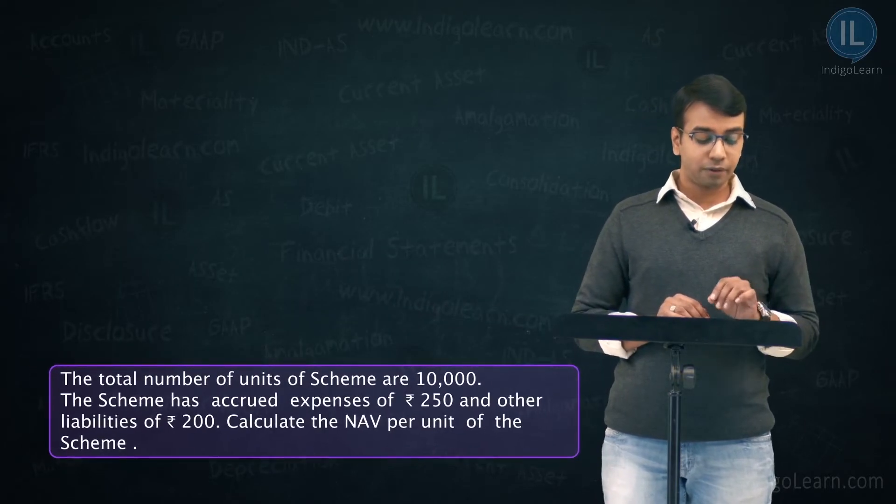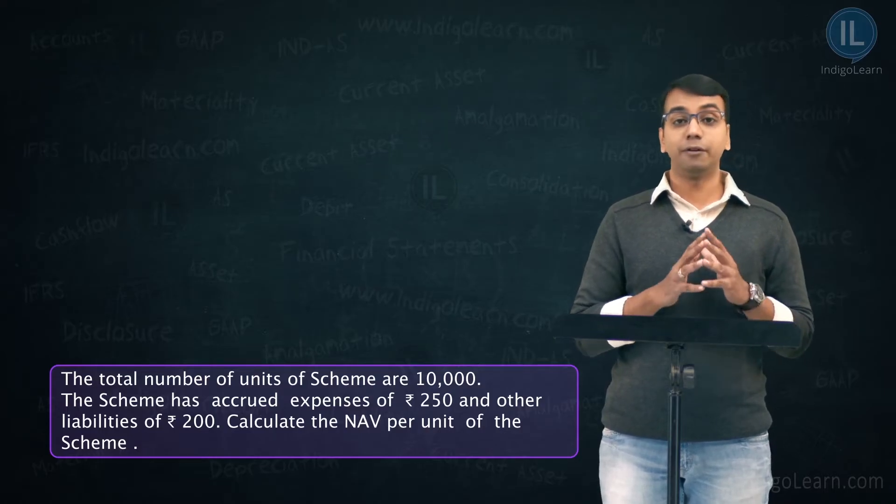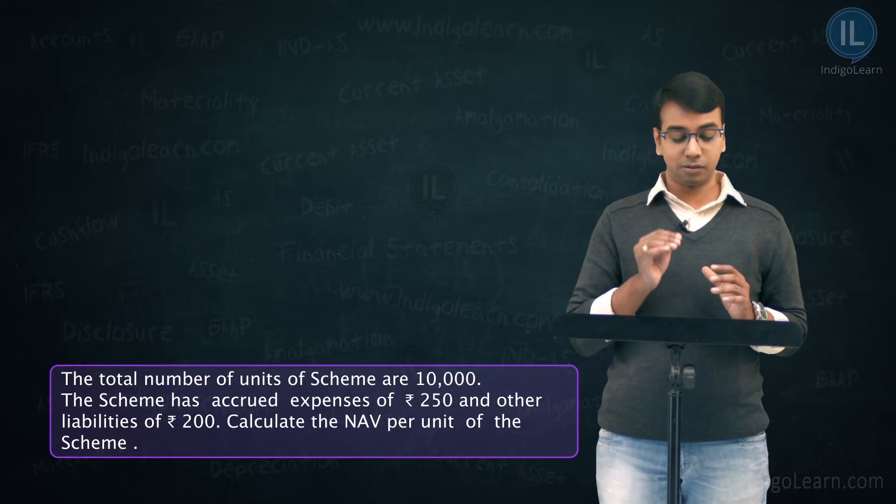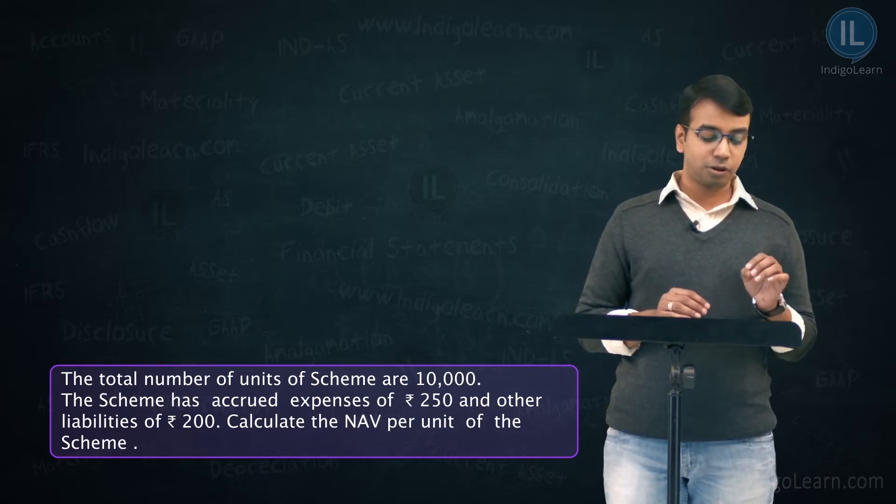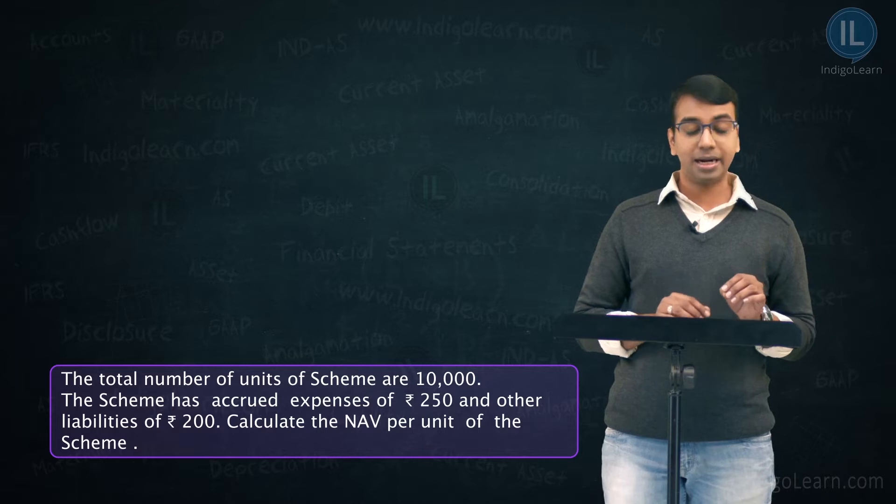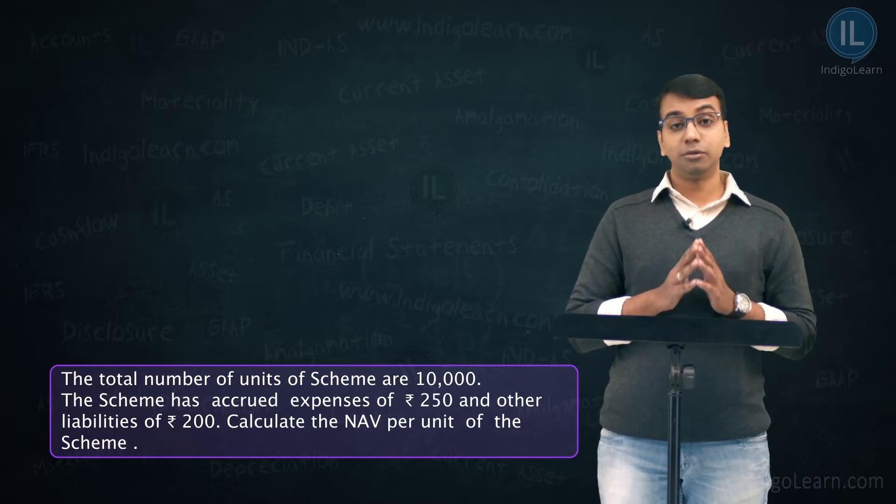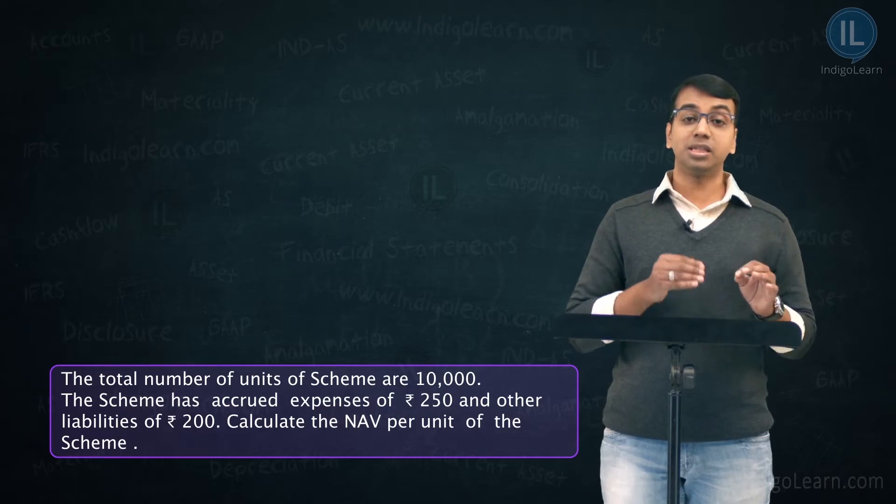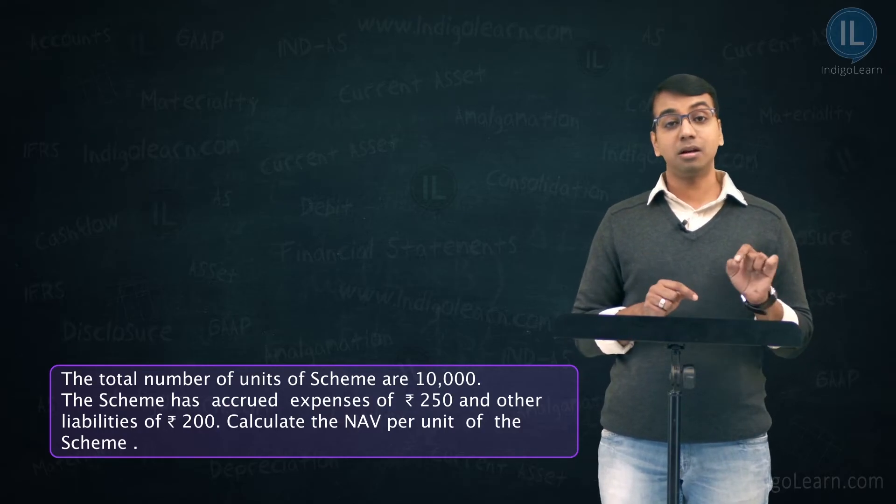The total number of units in the scheme are 10,000. Number of units in the scheme are 10,000 and the scheme has accrued expenses of ₹250 and other liabilities of ₹200. The mutual fund has accrued expense means yet to pay expenses of ₹250 and other liabilities of ₹200.